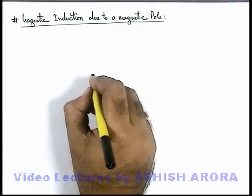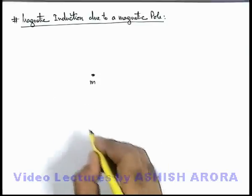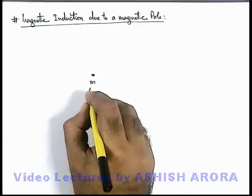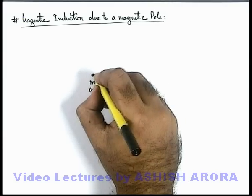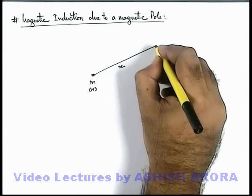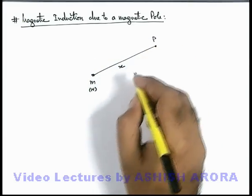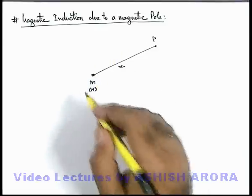If we are given a magnetic pole of pole strength m, and we consider it is of north pole in nature, and at a distance x from this pole at point P, we are required to find the magnetic induction due to this pole.